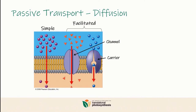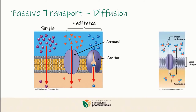You've probably already seen an example of facilitated diffusion — that's where molecules of water go through the lipid bilayer through a specialized protein called aquaporin. This process is really important for osmosis.